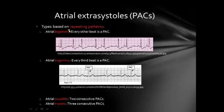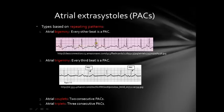We can also classify them based on their bigeminy patterns. The first type is called atrial bigeminy: every other beat is a premature atrial contraction. So we have a normal beat followed by an abnormal beat — a peaked P wave followed by a pause — then normal beat, abnormal beat, and so on. The abnormal beat is the extrasystole. This is called atrial bigeminy.